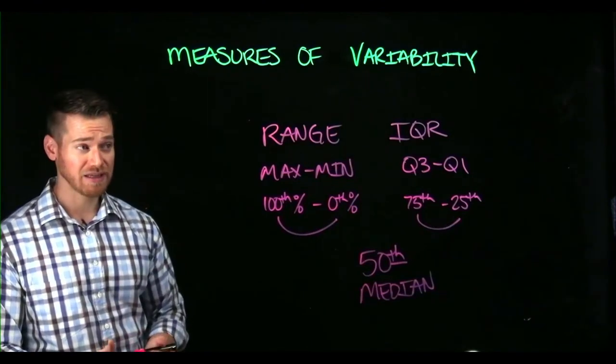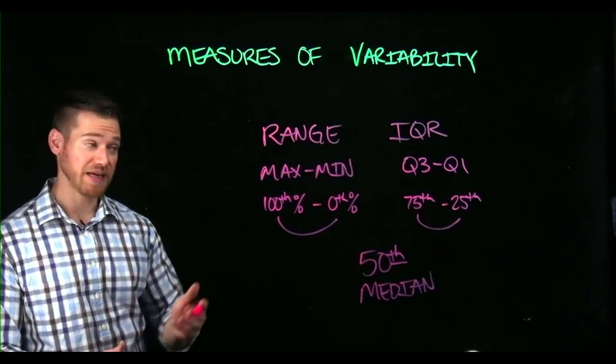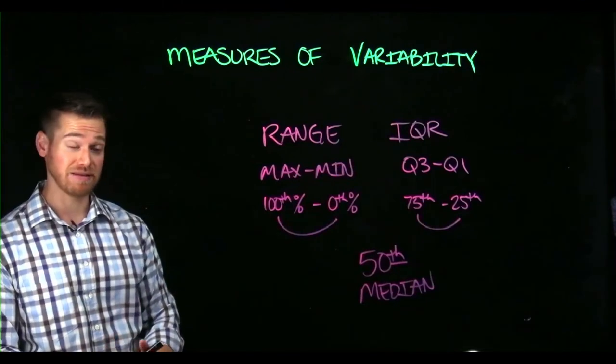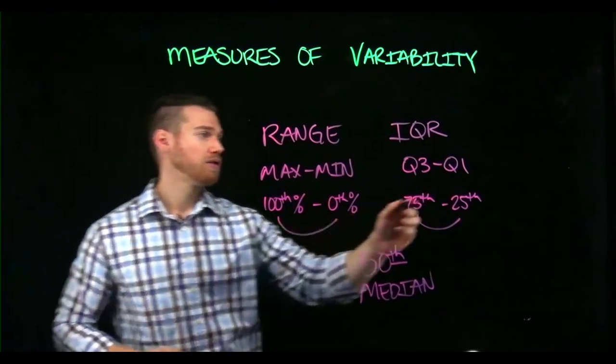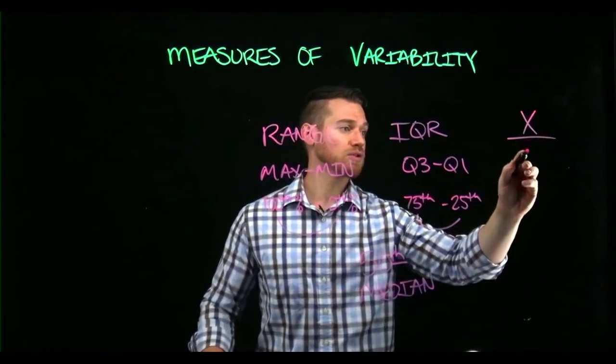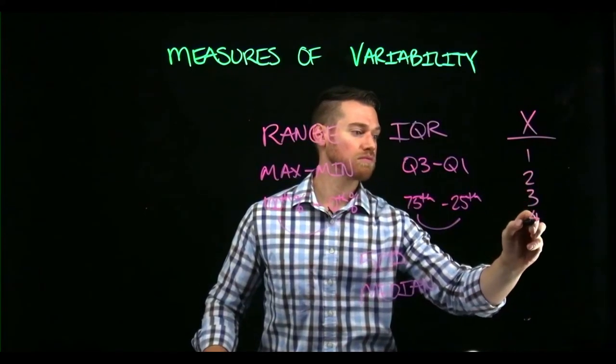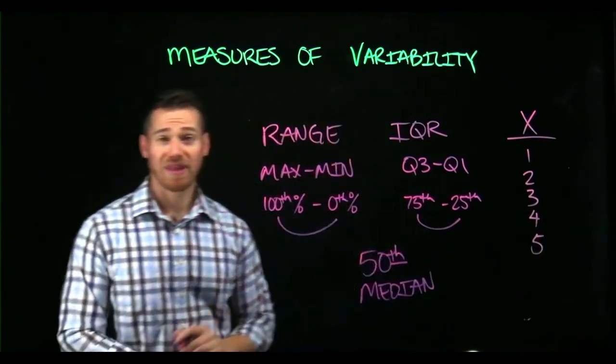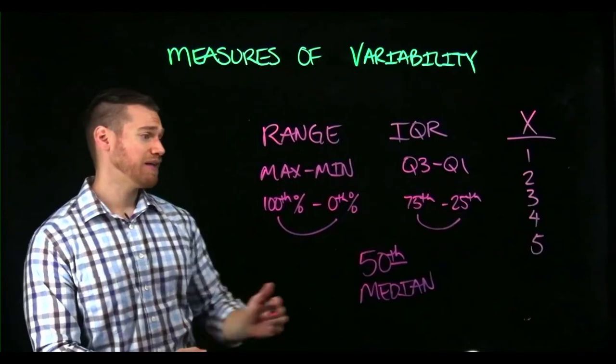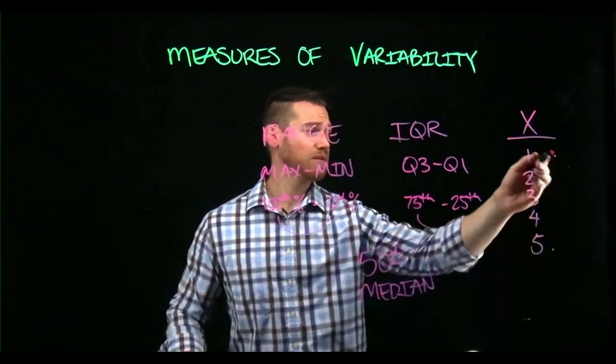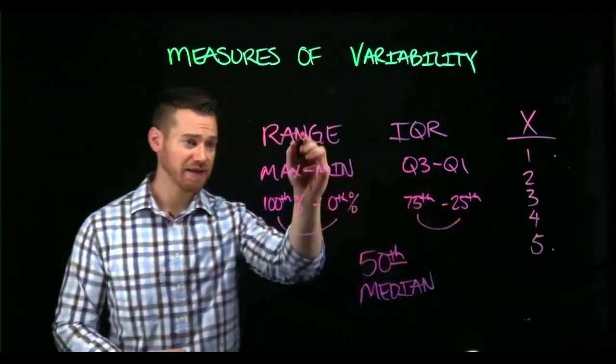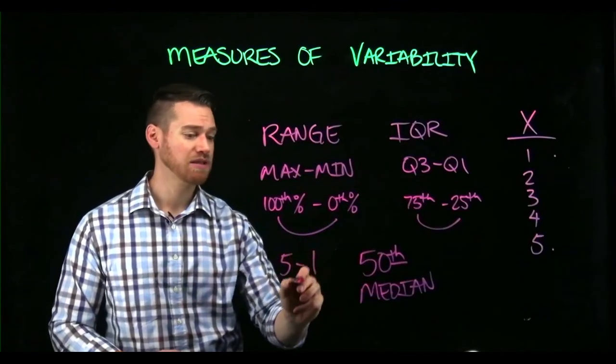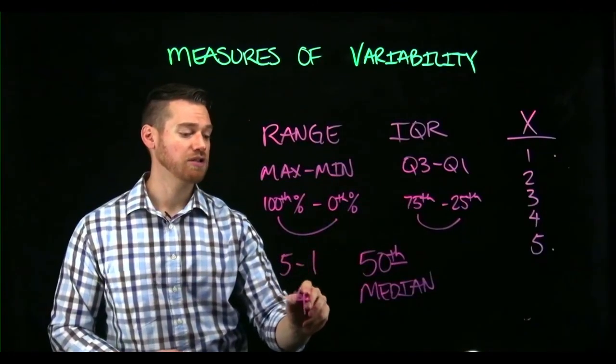If we have a set of data and we want to get these values, we can obtain them by finding the values at these different points. So if we have a set of X scores like that, we can find the maximum and the minimum. We subtract max minus min and we get a range of four.